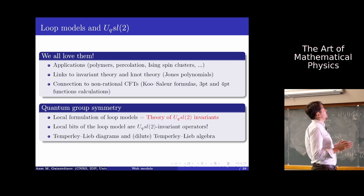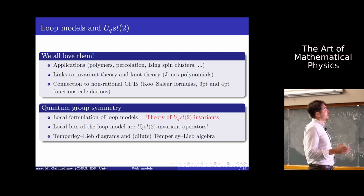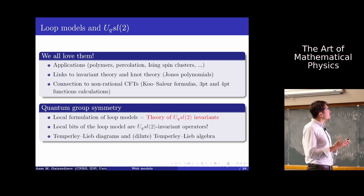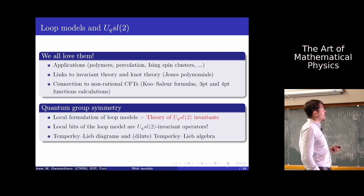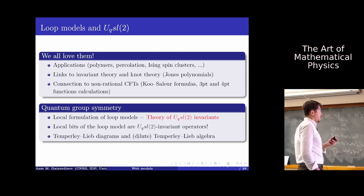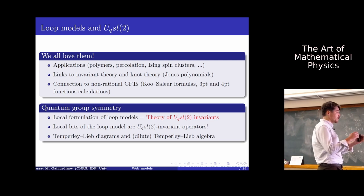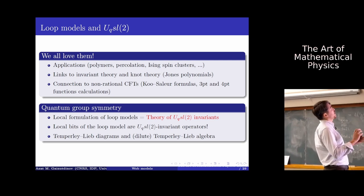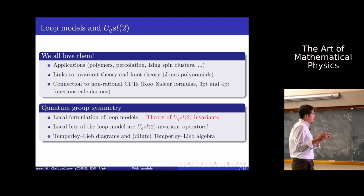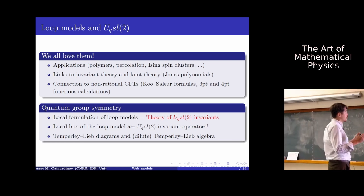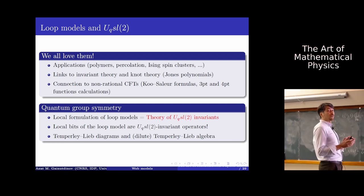For example, loop models admit a transfer matrix formulation — one can write them in terms of certain local rules. The local formulation of a loop model is basically the theory of U_q(SL2) invariants. From this point of view, local pieces of the loop model can be thought of as U_q(SL2) invariant operators, and this is how famous algebras such as Temperley-Lieb appear.